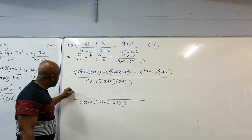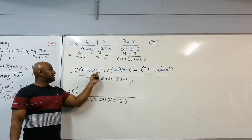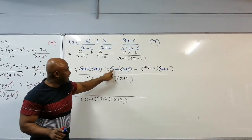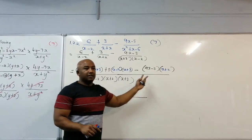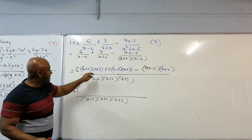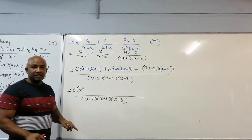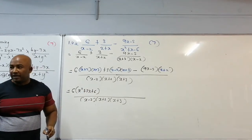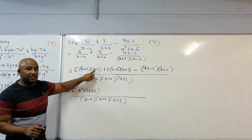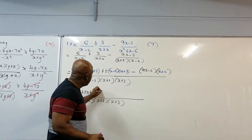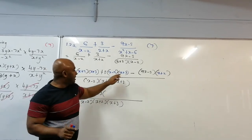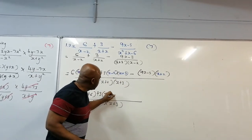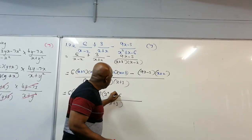Now we multiply everything out. We've got the 6, then we multiply x plus 2 times x plus 3. Using the quick method — when the coefficient of x is positive 1, x times x gives x squared, then 2 plus 3 is 5 so the middle term is 5x, then 2 times 3 is 6. For the next bracket, x times x is x squared, minus 2 plus 3 gives positive 1, so positive x, and minus 2 times 3 is minus 6.